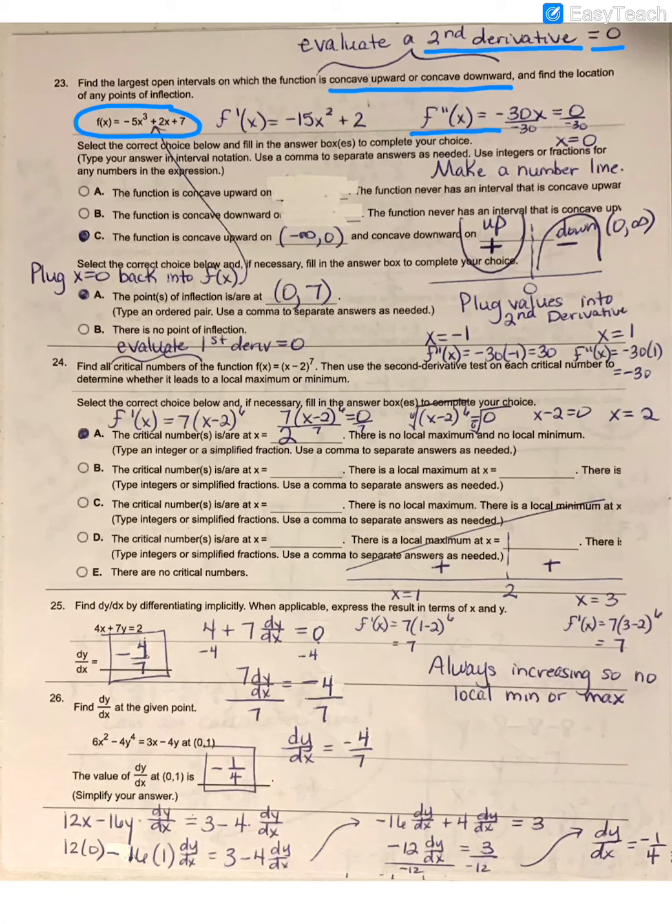If I set that equal to 0 and solve, then I have a possible inflection point of x equals 0.